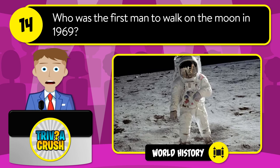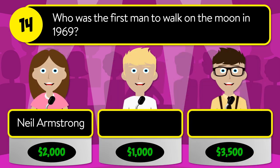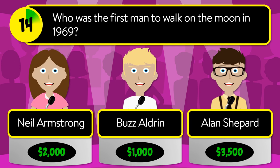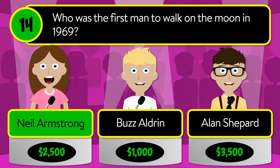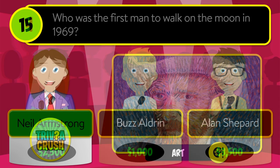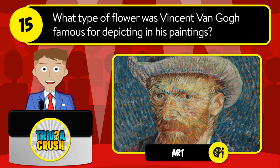Question number fourteen: who was the first man to walk on the moon in 1969? Was it Neil Armstrong, Buzz Aldrin, or Alan Shepard? The correct answer is Neil Armstrong.